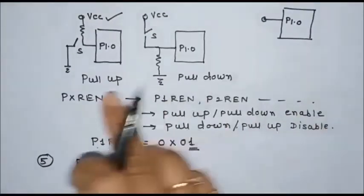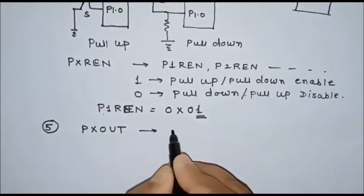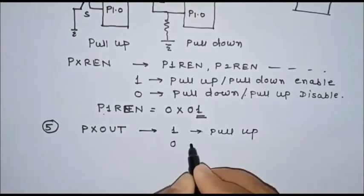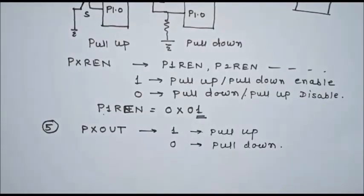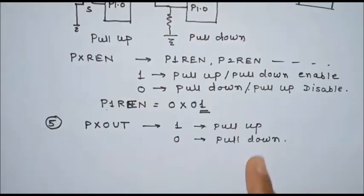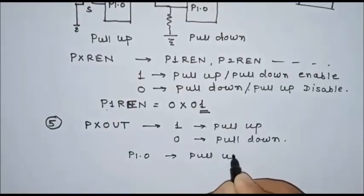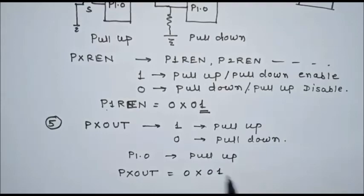To select the specific configuration — pull-up or pull-down — we use the PxOUT register. If 1 is set for a particular bit, pull-up configuration is used; if 0 is set, pull-down configuration is selected. First enable the configuration using PxREN, then select pull-up or pull-down. For example, to use pull-up for P1.0, initialize P1OUT with 0x01 immediately after initializing P1REN — the 1 indicates pull-up configuration is selected.